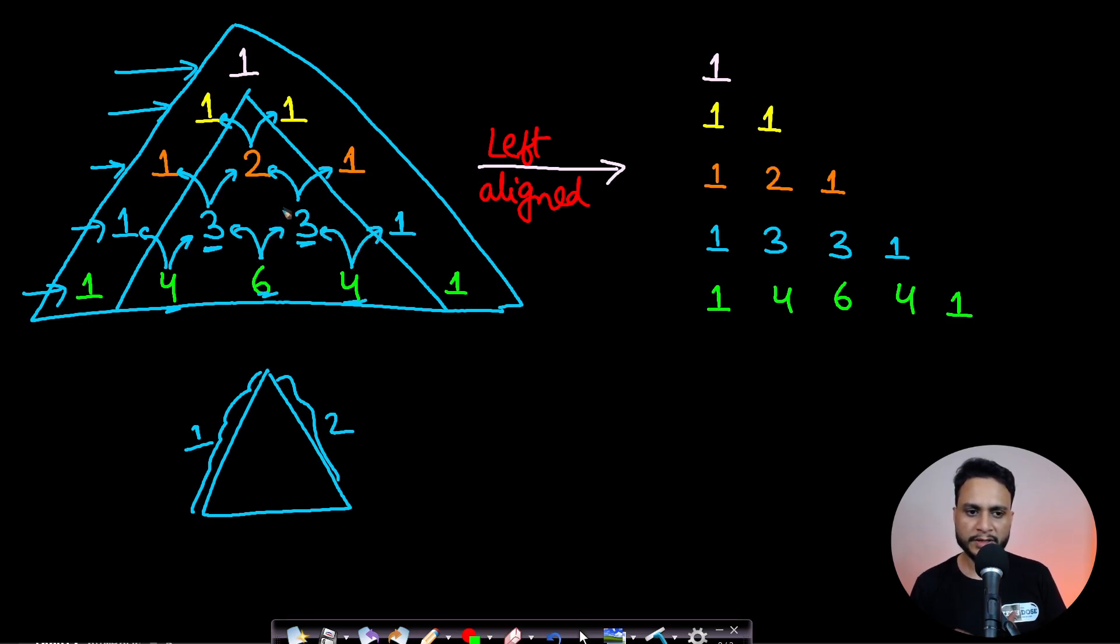The property of Pascal's triangle is: if you fill all these numbers row-wise in the form of a triangle, all the boundary elements on the left and right will be ones, and the internal elements will be the sum of two adjacent elements from the previous row.